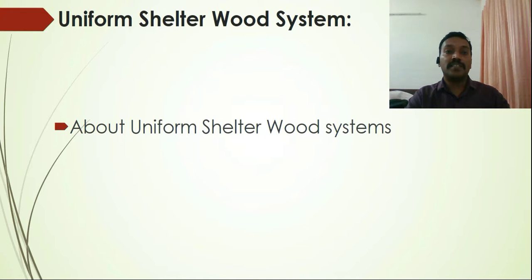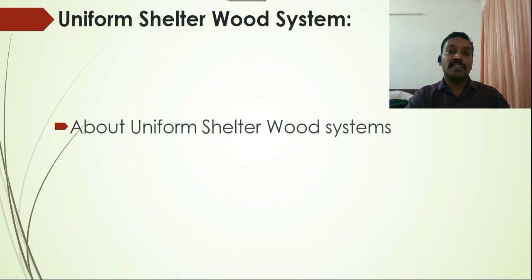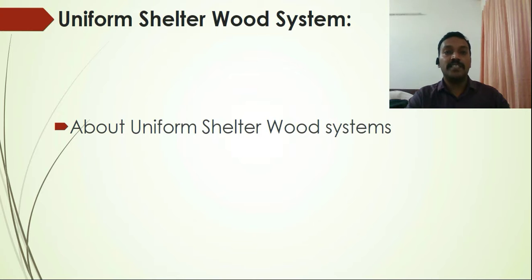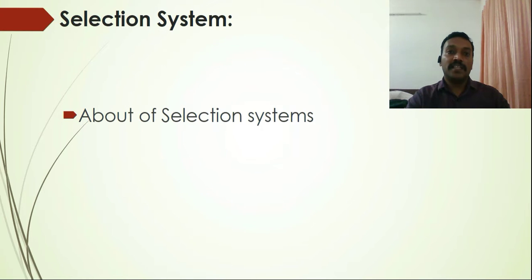The second important system is the uniform shelterwood system. Unlike clear felling, felling is not highly concentrated, but more so than in the selection system. The area is divided into different groups, and every group is harvested or treated in a given time period. Different age classes are created as a result of this treatment.